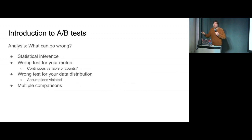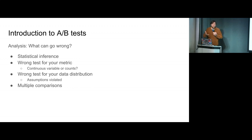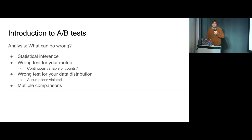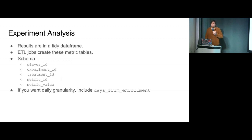What can really go wrong in this? There are all these statistical tests and inferences, some a good hundred years old - what can go wrong? Well, there's quite a lot. You might do the wrong test for your metric - is your metric a ratio, a count, a continuous variable? You might do the wrong test for your data distribution, because every test makes assumptions about the underlying distributions. And of course there's the problem of multiple comparisons - with a p-value of 0.05, 1 out of 20 you're going to have a false positive.